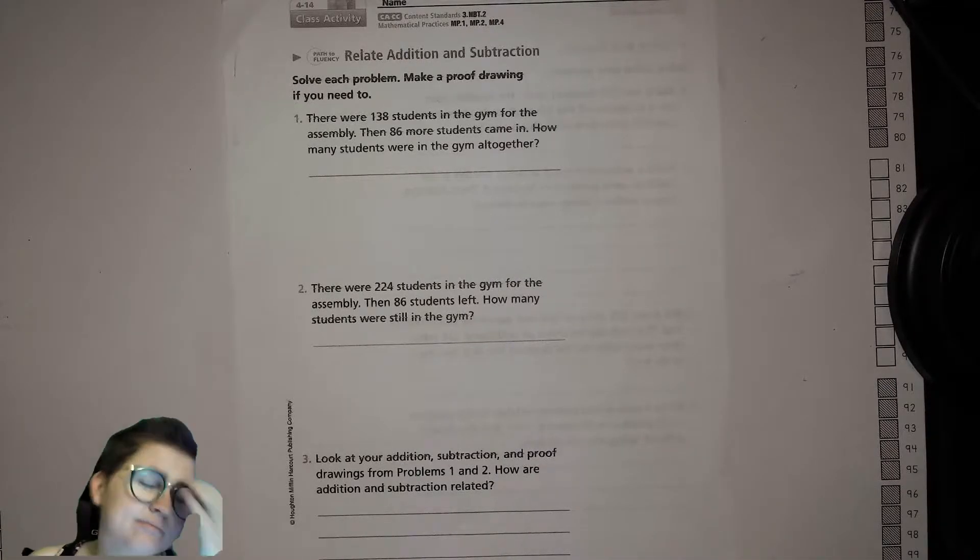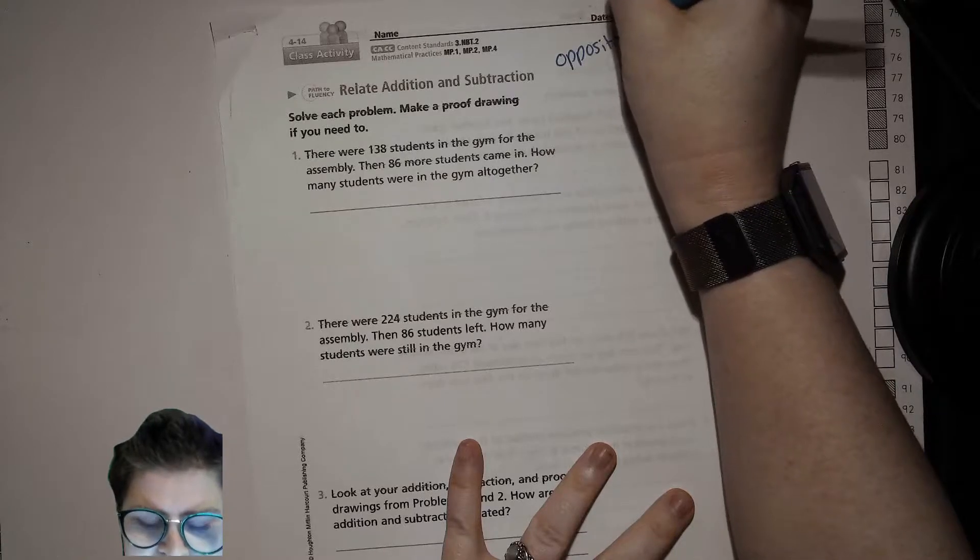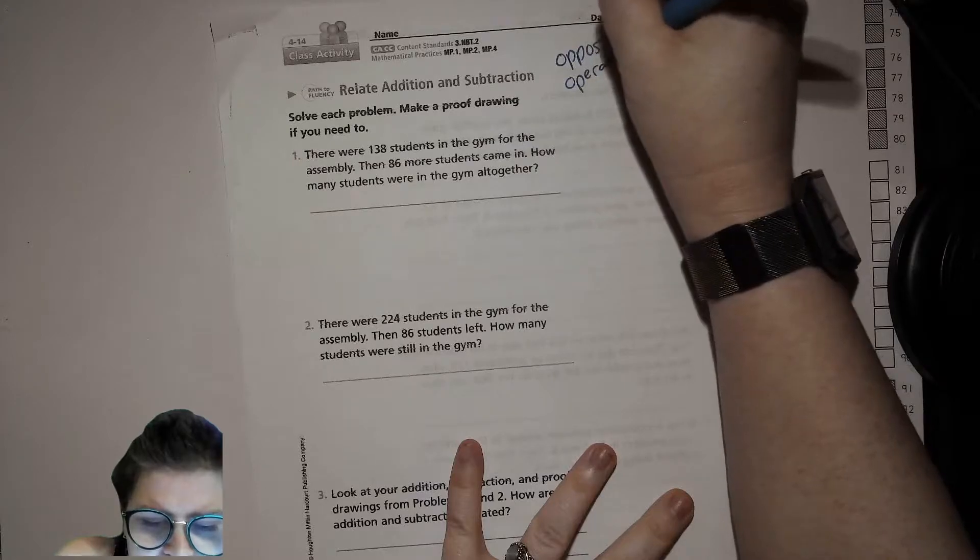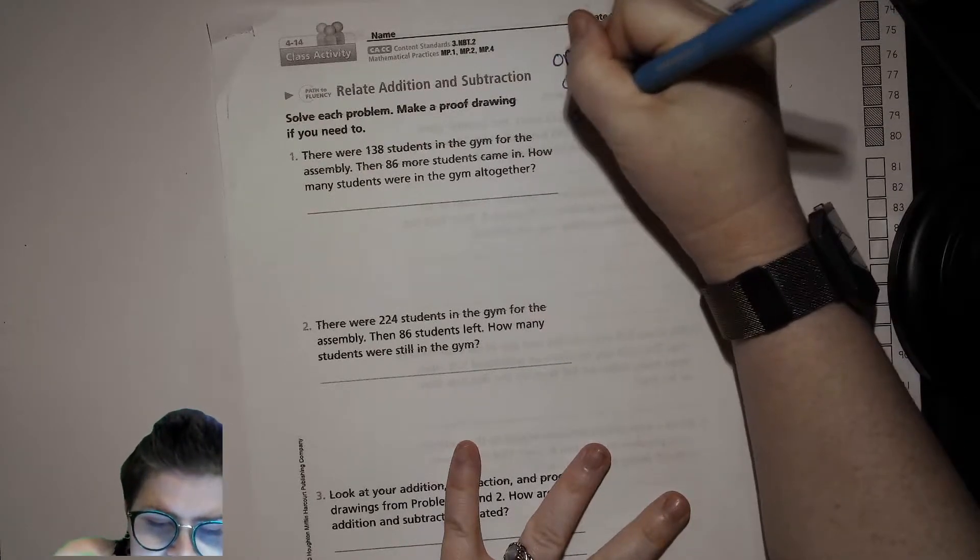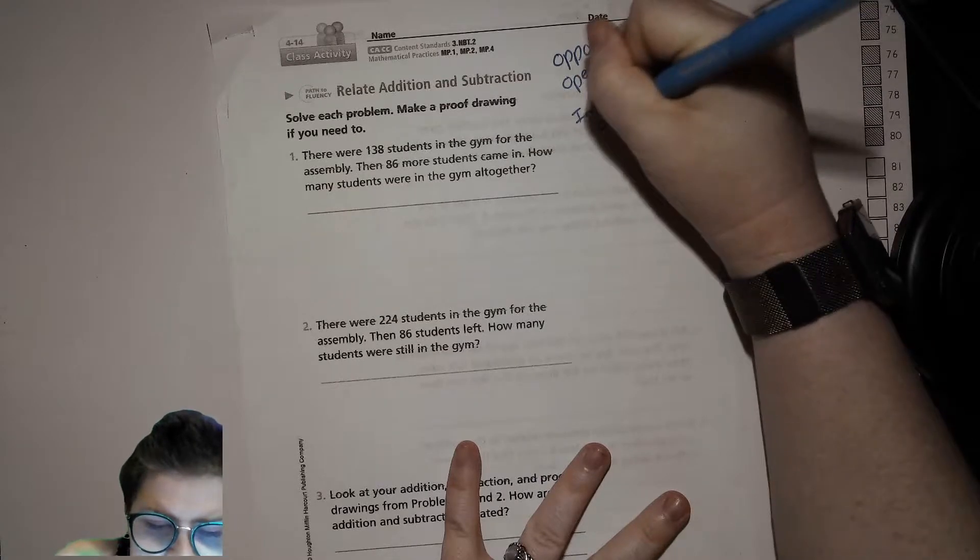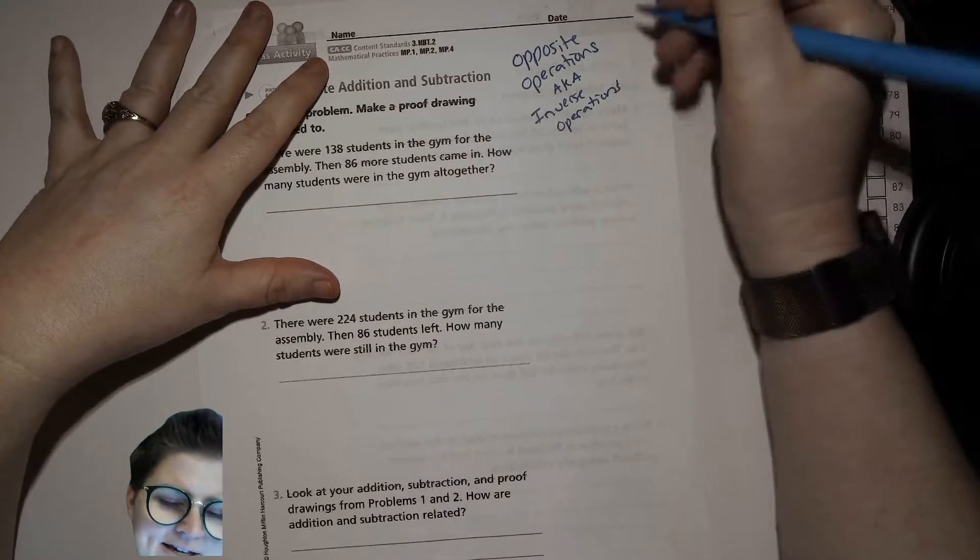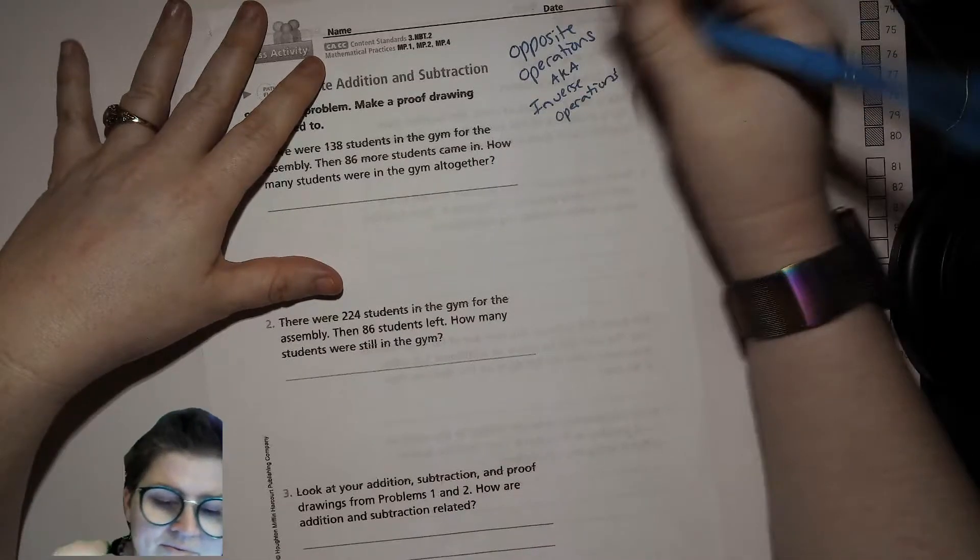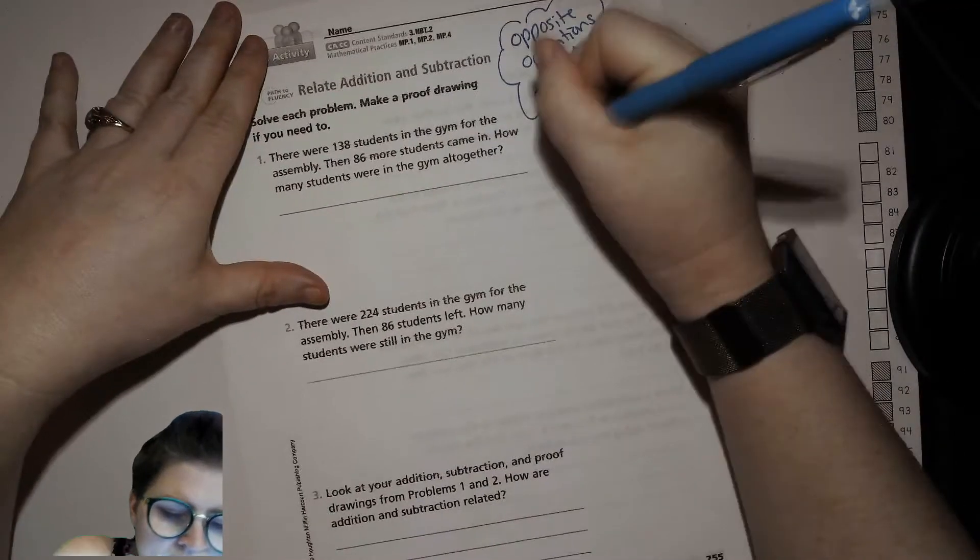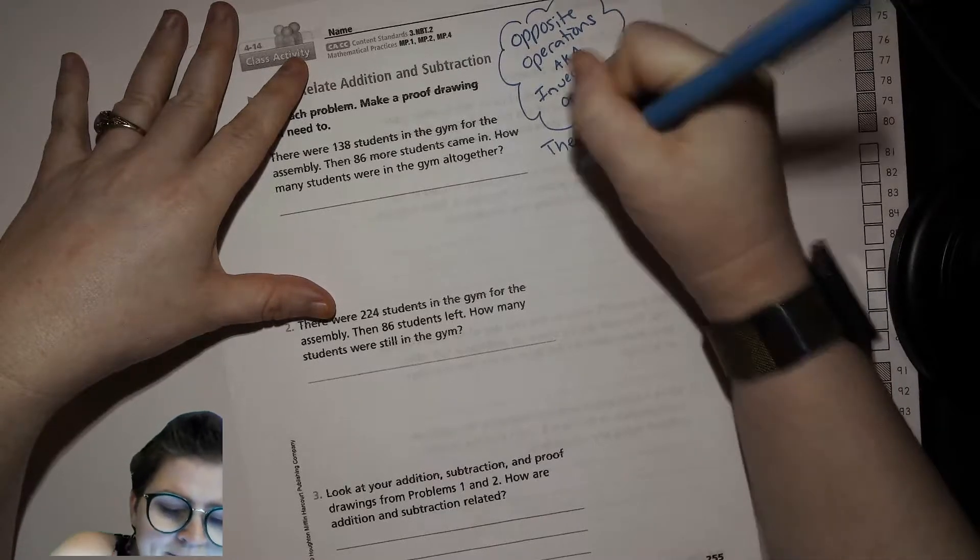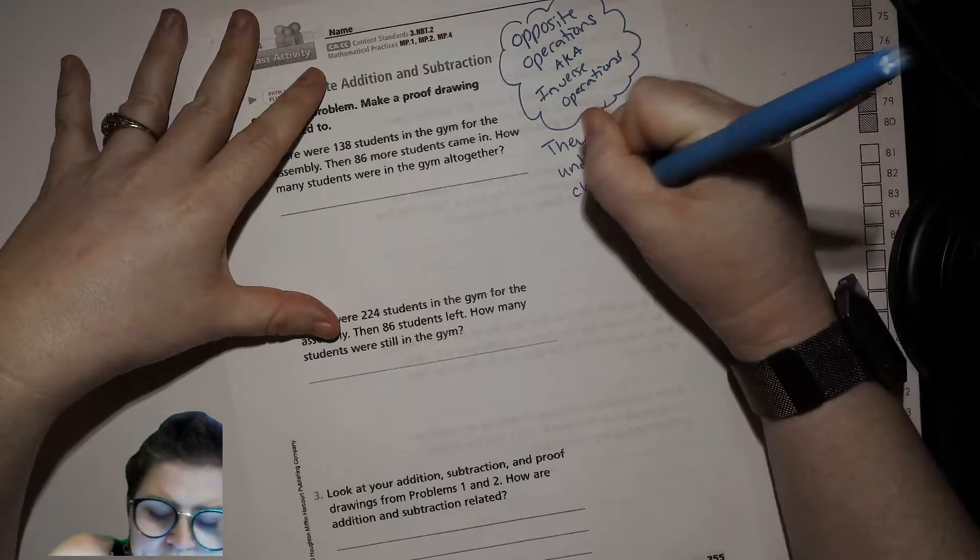What are you noticing? You might have heard the phrase that they are opposite operations, also known as (aka means also known as) inverse operations. Those are both fancy ways of saying that they undo each other, they can undo or check one another.